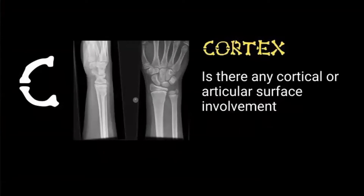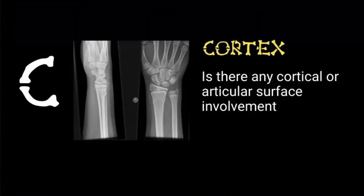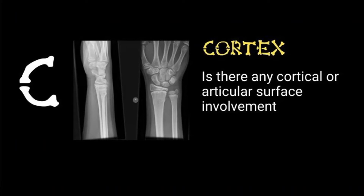C — thinking about the cortex. We're talking about paediatric minor injuries here today, but the principles still apply elsewhere. Is there cortical or articular surface involvement? Looking at this x-ray, it's got a nice buckle fracture — you can see that classic bump on a bone.